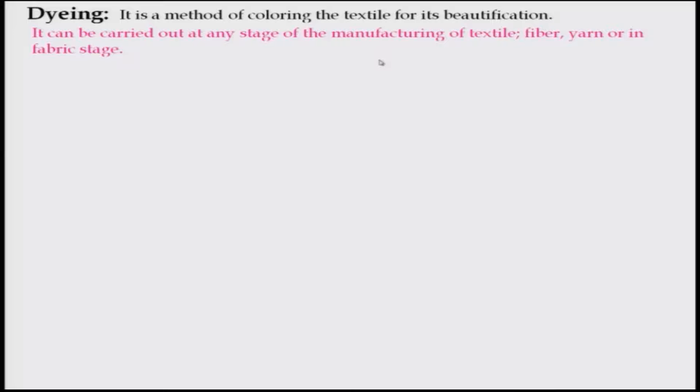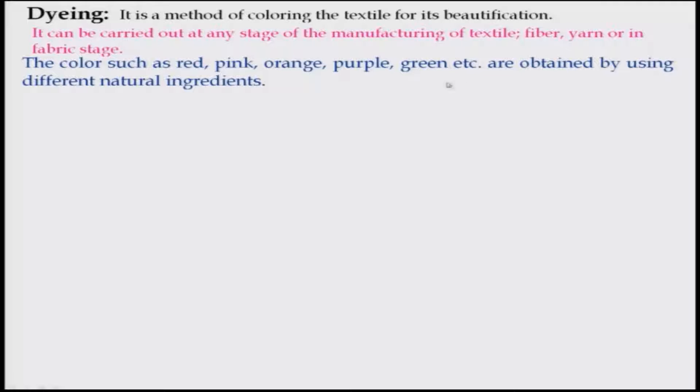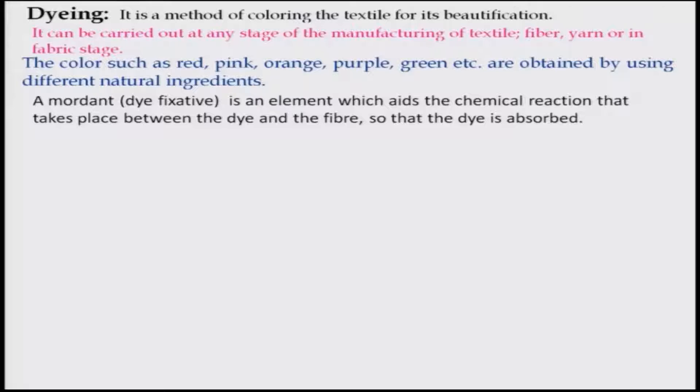Let us look at the dyeing process, which is basically a method of colouring textiles for beautification. It can be done at any stage of manufacturing — at the fibre stage, the yarn stage, or the fabric stage itself. Colours such as red, pink, orange, purple, and green are obtained by using different natural ingredients. Particularly in ancient India, people used natural dyes, and other parts of the world also used natural pigments for colouring in earlier days. A mordant — also known as a dye fixative — was used to aid in the chemical reactions between the dye and fibre, helping the dye absorb into the yarn or fabric.